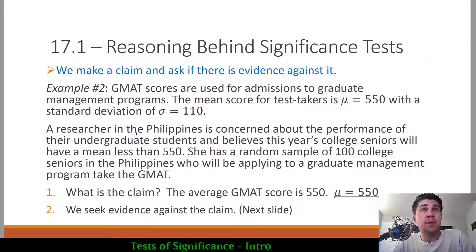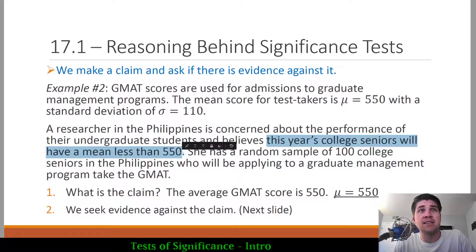A researcher in the Philippines is concerned about the performance of their undergraduate students and believes that this year's college students will have a mean less than 550. So here's the essence of the significance test. It's stated that in general GMAT test takers have a given mu value, a given average test score. But this researcher imagines that her group of students within the Philippines actually does not have that average. And that's always the nature of a test of significance.